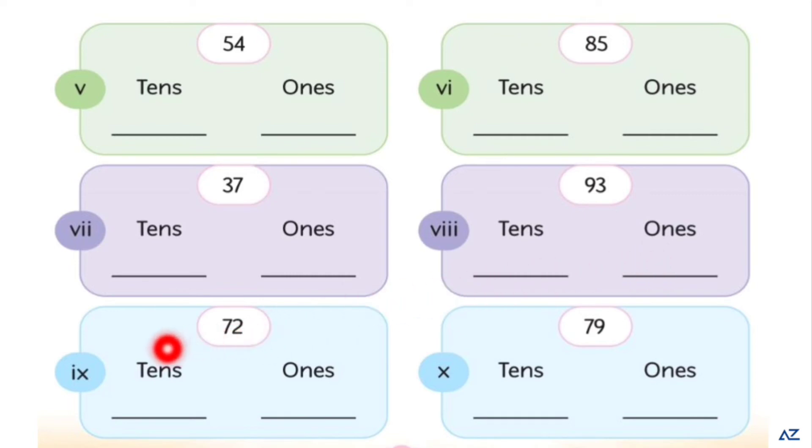72, write here number 7 and write here number 2. This is number 79, you will write 7 here and 9 here. Do your work carefully and properly dear kids. Your writing should be neat and clean.